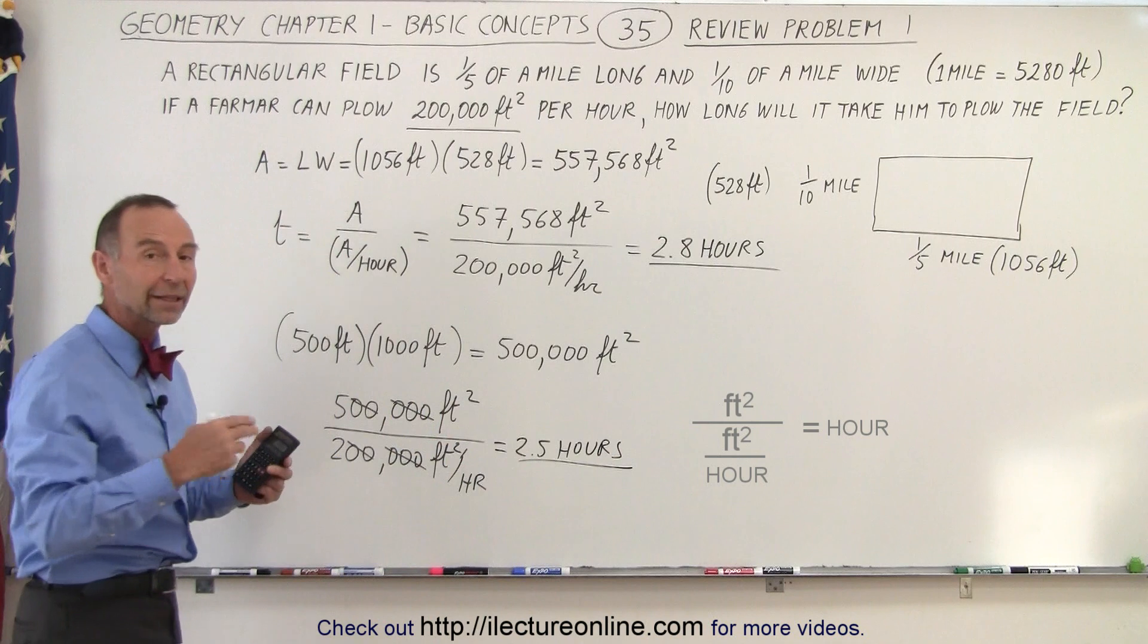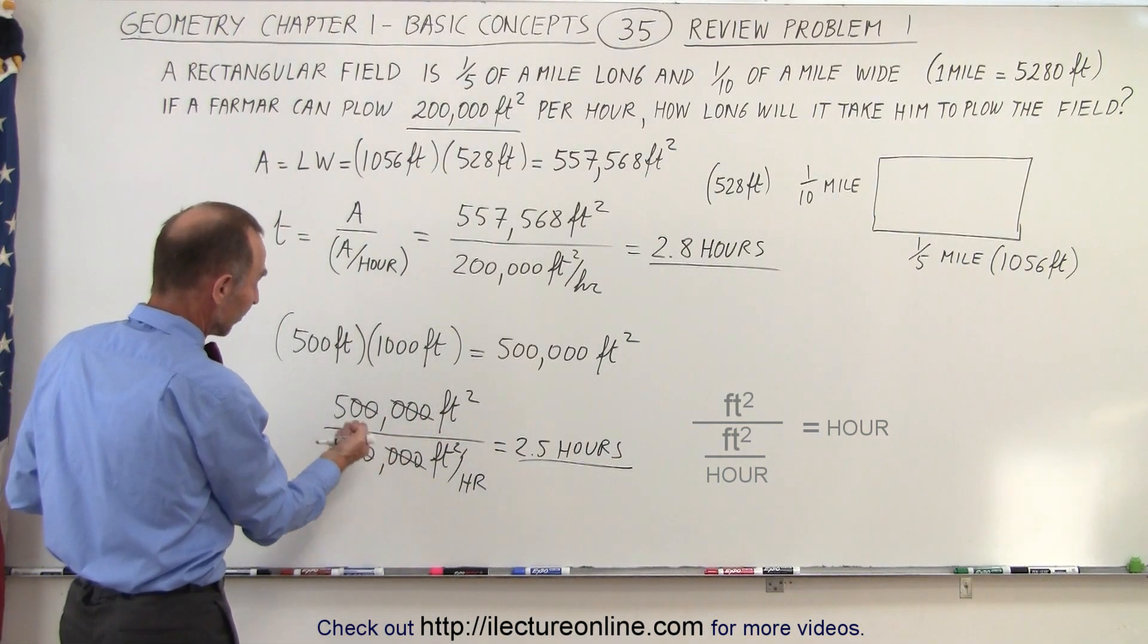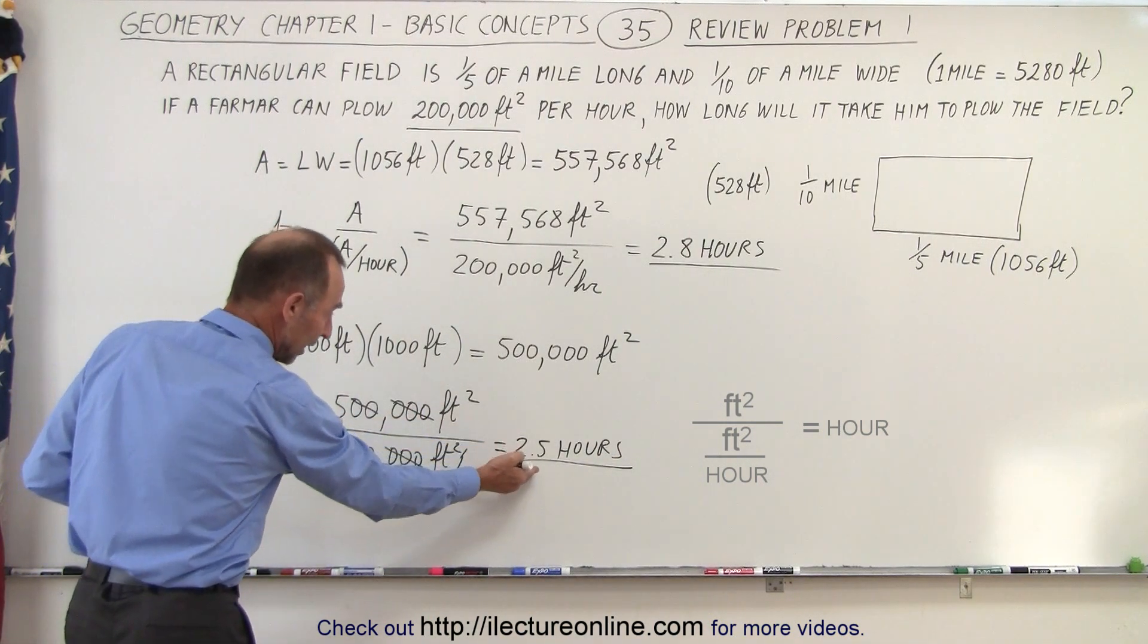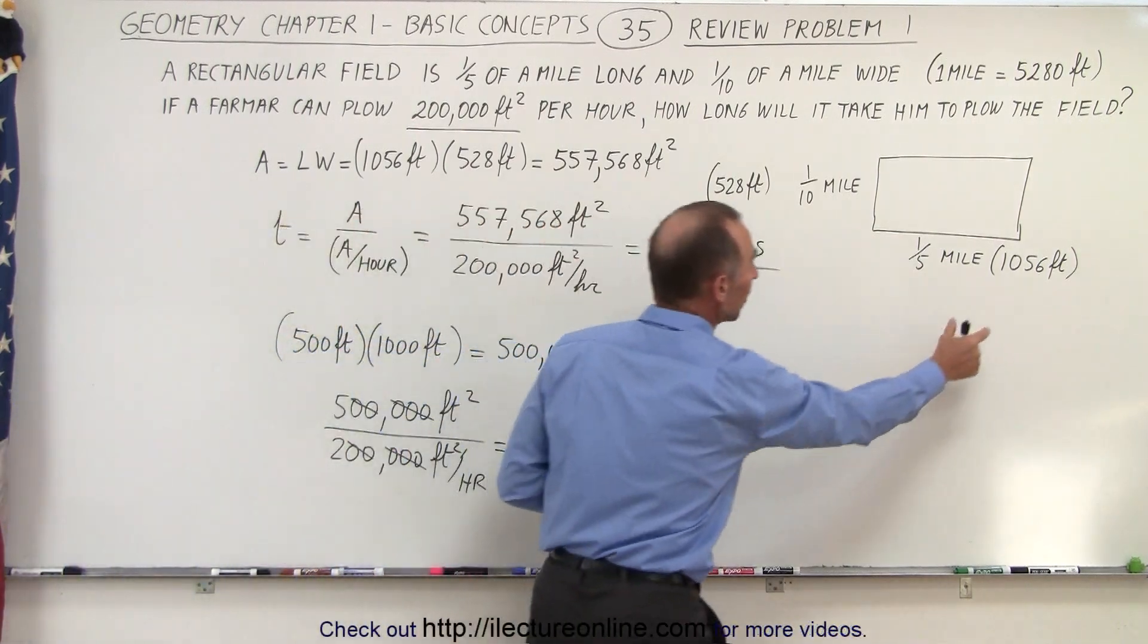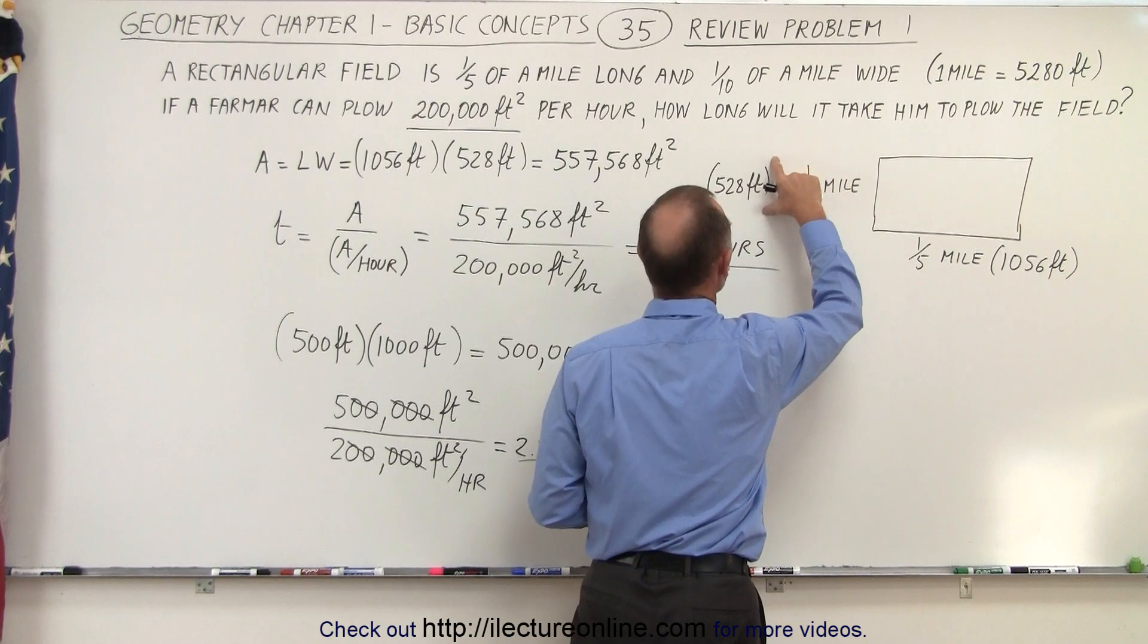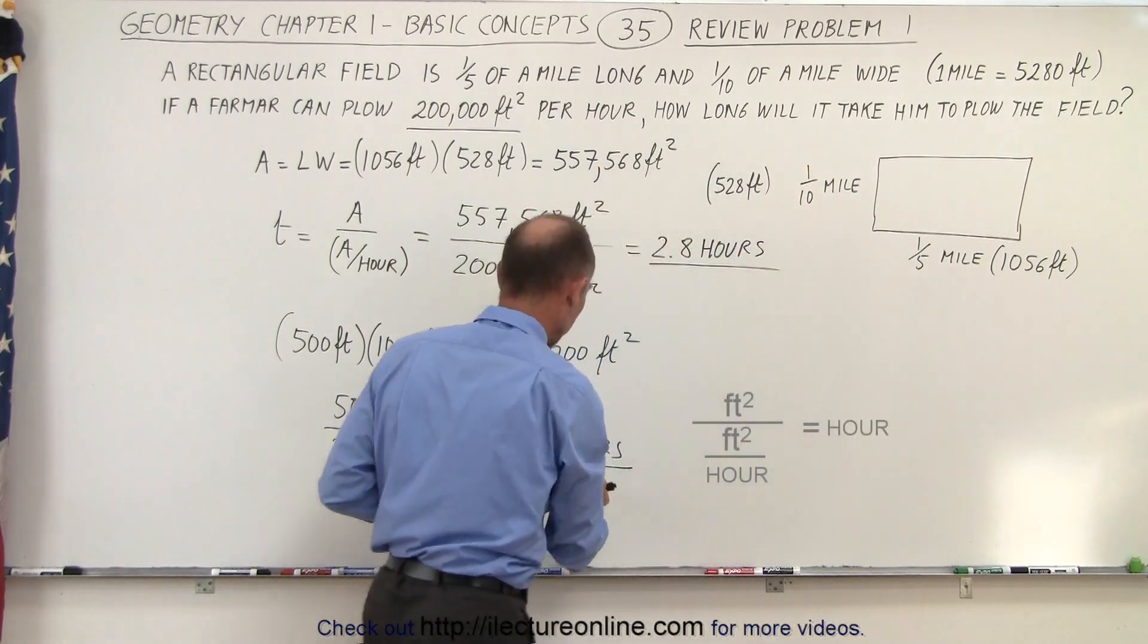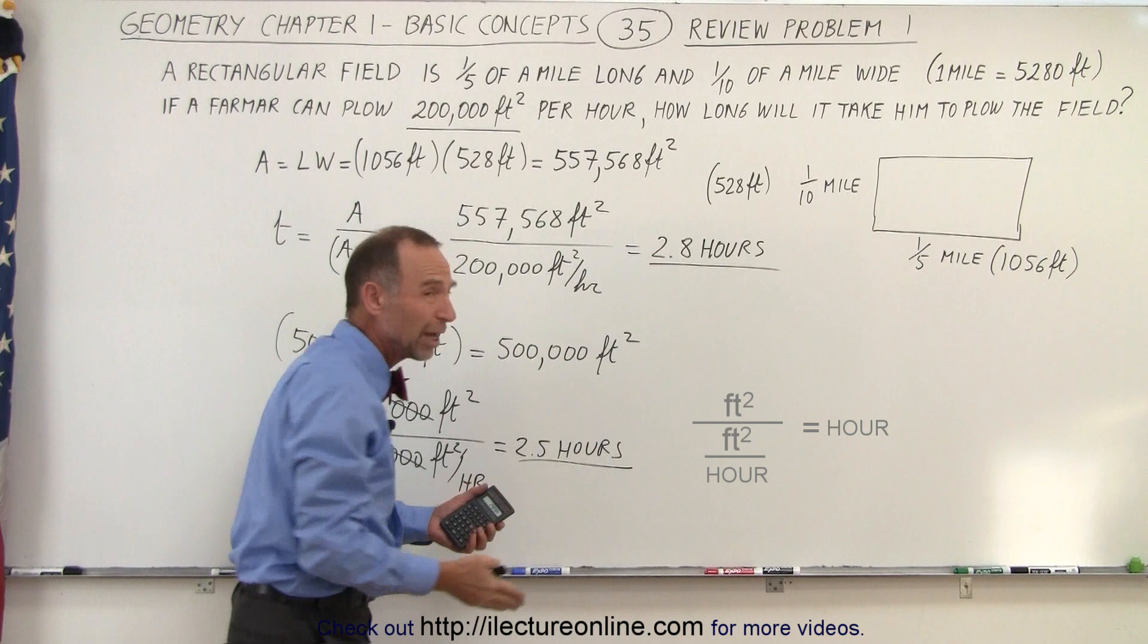Notice by rounding the numbers, we can very quickly, even without a calculator, figure out that the answer should be near two and a half hours. Realizing that it's a little bit more than a thousand feet and a little bit more than 500 feet, the answer should be a little bit more than two and a half hours. We got 2.8.